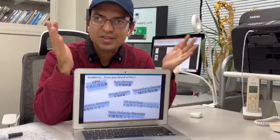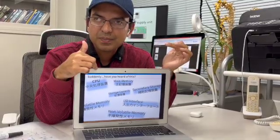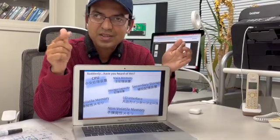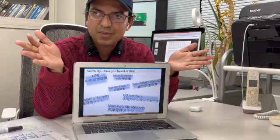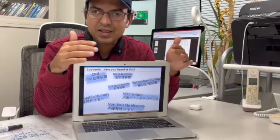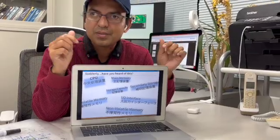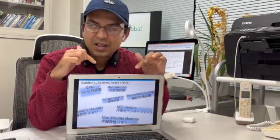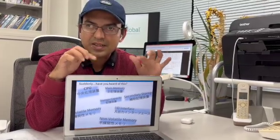The CPU, the main memory, the I/O interface, volatile and non-volatile memories, and the secondary storage all together make the computer system. If you can connect these components in a systematic way, you can build a computer system.